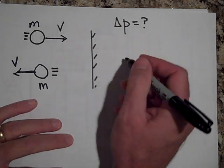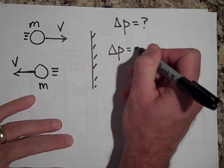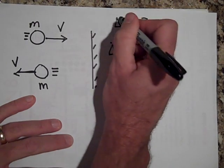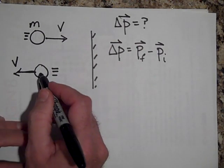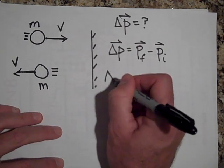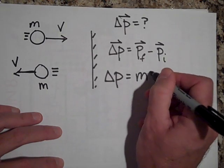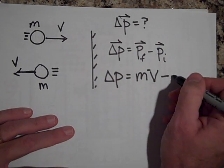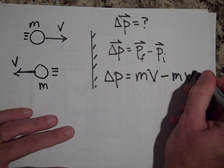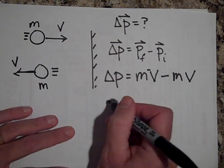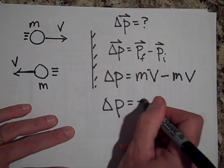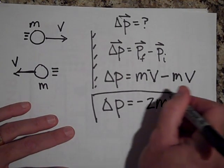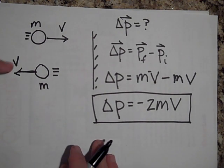Okay, we're back. Change in momentum is p final minus p initial. One of these has to be negative. So p final is going to be m times v, but it's a negative v, minus p initial which is m times v. When you do that, the change in momentum is negative 2mv. It's not zero — the ball did change its momentum.